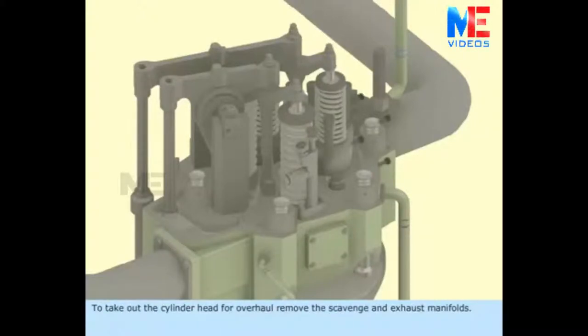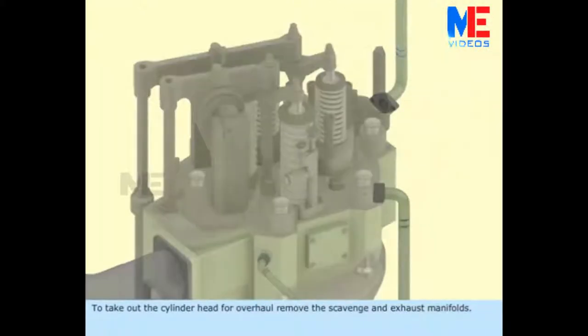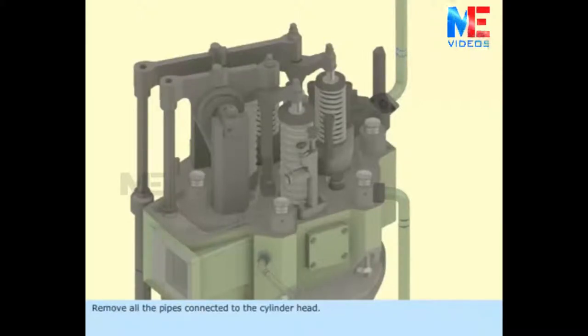To take out the cylinder head for overhaul, remove the scavenge and exhaust manifold. Remove all the pipes connected to the cylinder head.